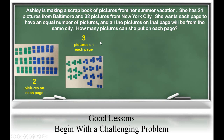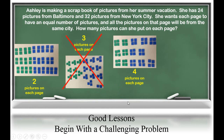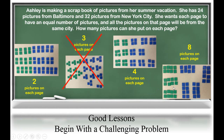Students might then try to divide the pictures into groups of three pictures on each page. That works for the pictures from Baltimore because three is a factor of 24. However, it does not work for the pictures from New York City because three is not a factor of 32, and we have two leftover pictures. So three is not a possible choice. Students might then put the pictures into groups of four pictures on each page — four is a factor of both 24 and 32. Students would then use their manipulatives to try groups of five, six, seven, and eight pictures on each page, which is the final common factor between 24 and 32. So Ashley could have groups of two, four, or eight pictures on each page.